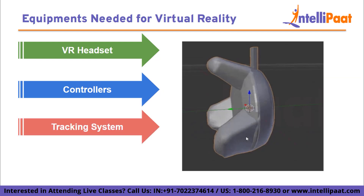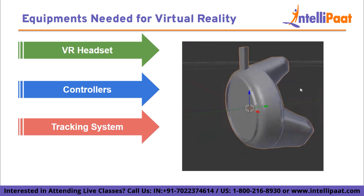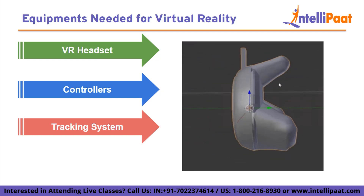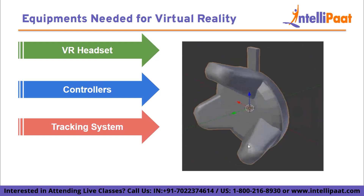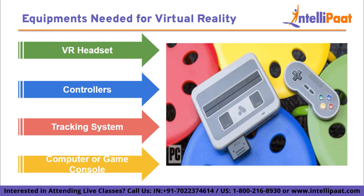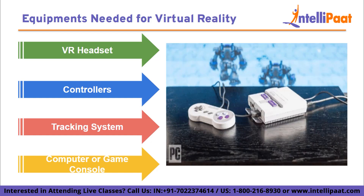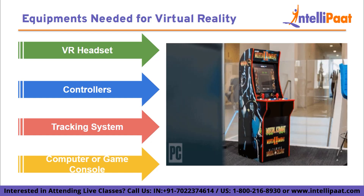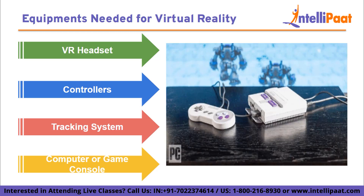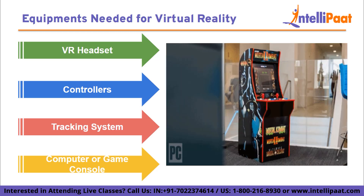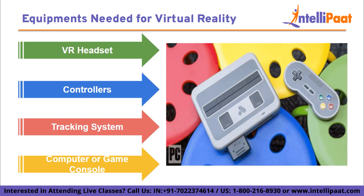Tracking system: for a more immersive experience, VR systems often include a tracking system consisting of sensors placed in the room or on the headset. These sensors track movement, allowing the virtual world to respond accordingly. Computer or game console: most VR systems require a powerful computer or game console to run the virtual reality software. These equipment pieces work together to create an immersive virtual reality experience, allowing you to see, hear, and interact with the digital environment as if it were real.